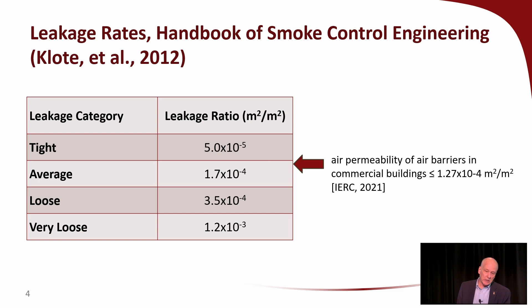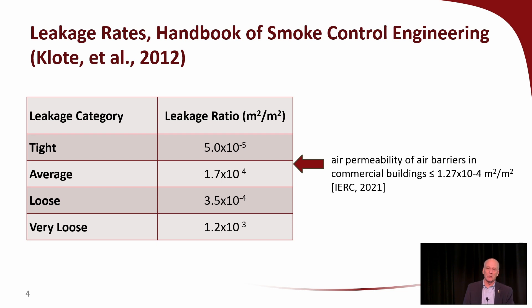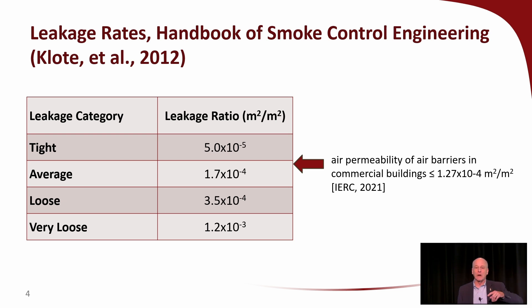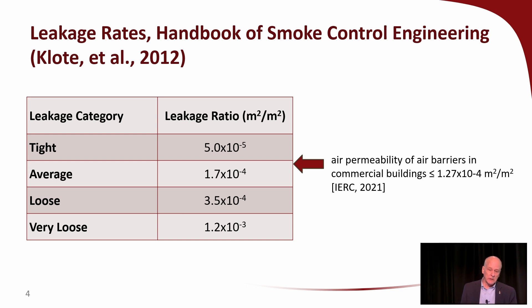There is some information from the International Energy Code 2021 edition that talks about the air permeability of air barriers — exterior walls in commercial buildings. They should be less than 1.27 × 10⁻⁴. So contemporary buildings where this code applies should be in the average range, a little less leaky than the average number in the table.